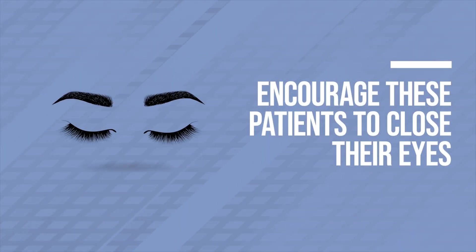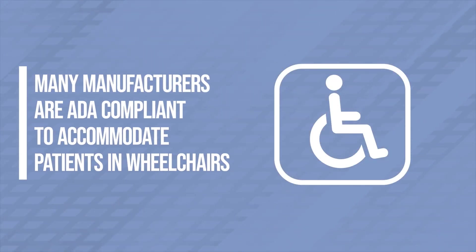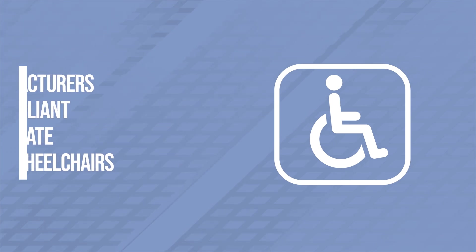Some patients have a tendency to follow the track of the tube head as it goes around them. It is best to have those patients close their eyes so they do not make those same movements. A concern many practices have is wheelchair access for their panoramic units. Many manufacturers are ADA compliant and allow their machines to go low enough to accommodate patients in wheelchairs. However, wheelchair handles may make it difficult for the tube head to make a clean sweep, in which case you may need to move your patient to a chair without a back on it to allow smooth travel.